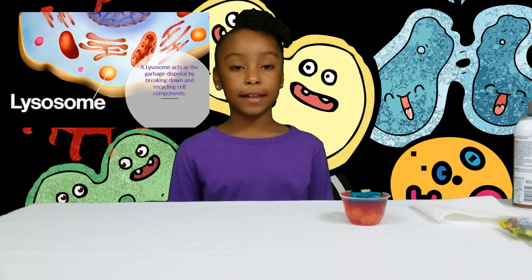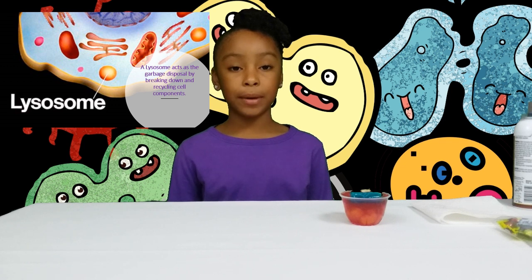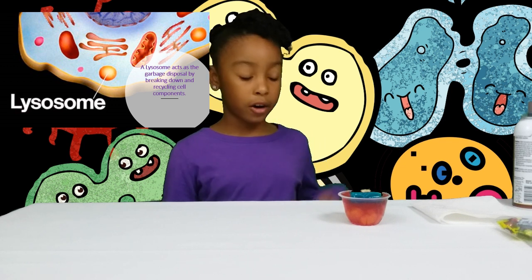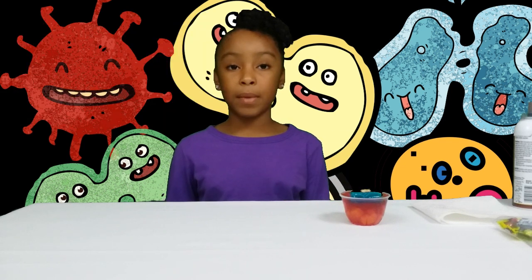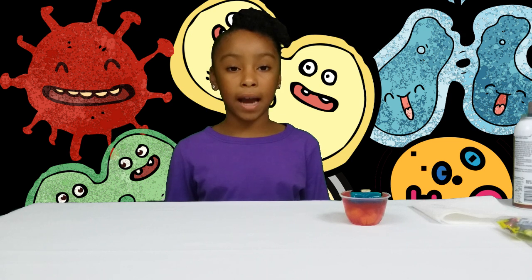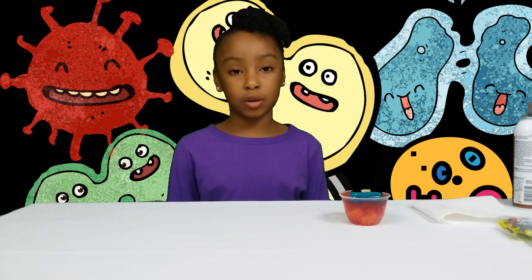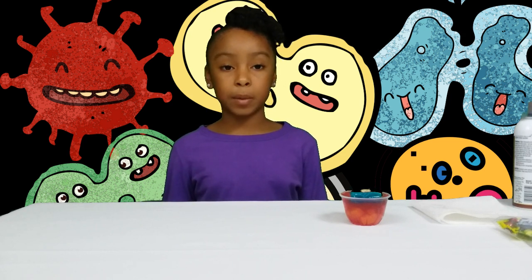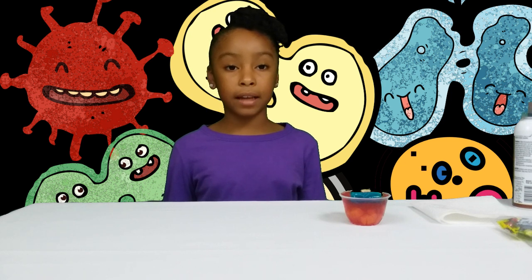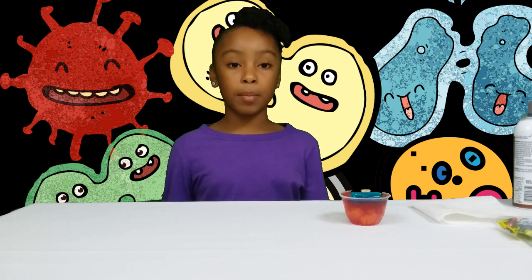The lysosomes are the next things we'll be talking about. The peaches that are already in the cell membrane will act as the lysosomes. They act like a garbage disposal by breaking down and recycling the cell components.